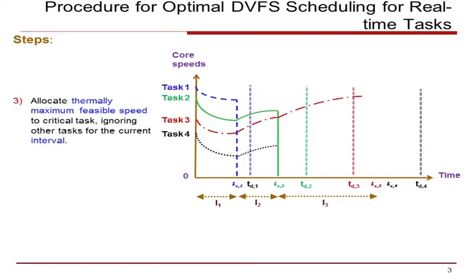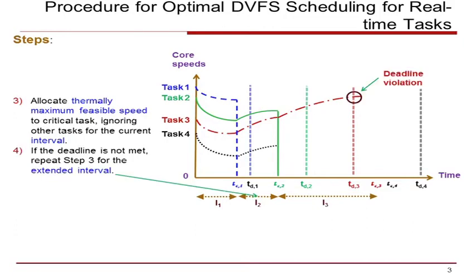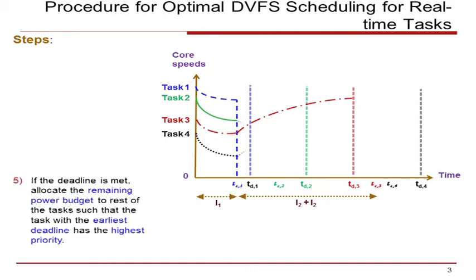Note that this may starve other cores from allocating any speed. If the speed assigned in step 3 did not enable the critical task to meet its deadline, then the current interval is extended to include one previous interval and step 3 is repeated again for the current extended interval. If the deadline for the critical task is met, then the speeds of other cores are allocated from the remaining power budget in the order of earliest deadlines. This procedure is repeated until all deadlines are satisfied.